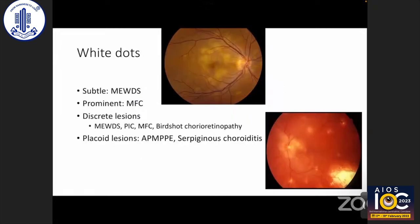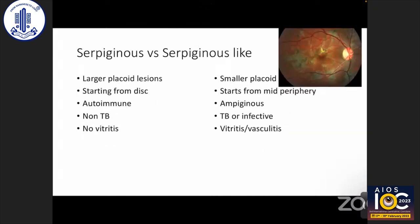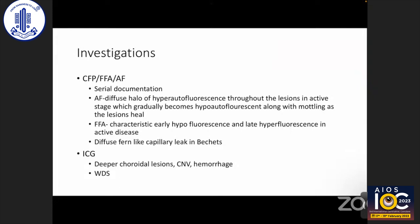In white dot syndromes: if lesions are subtle, think of multiple evanescent white dot syndrome (MEWDS); if prominent, consider multifocal choroiditis; if discrete, consider punctate inner choroidopathy, multifocal choroiditis, or birdshot choroidopathy; if placoid, consider AMPPE or serpiginous choroiditis. Serpiginous choroiditis is common — it has larger placoid lesions starting from the disc, is autoimmune, non-TB, and lacks vitritis. Serpiginous-like choroiditis is usually infective with TB as the cause, has small placoids starting from mid-periphery, and is associated with vitritis and vasculitis.